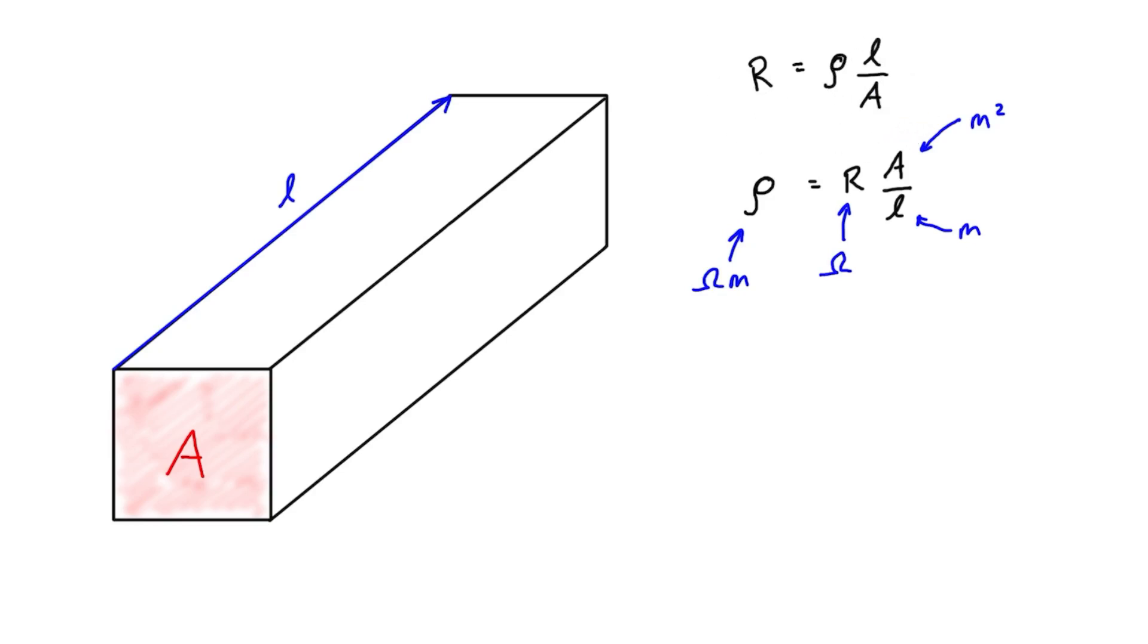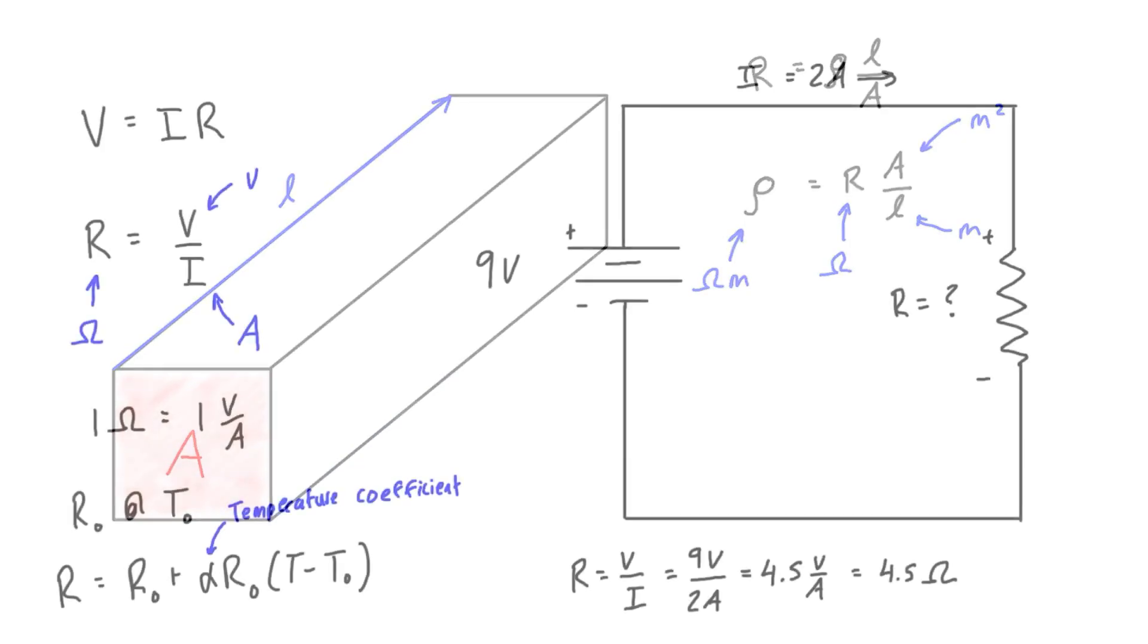So if we just quickly flip back to the previous video, which is right here, if you want to watch it, I'll put a link to it in the top right corner. But basically what I was talking about here was finding the resistance of this resistor in this very simple circuit with a single voltage source and a single resistor. And basically we just determined the resistor to have 4.5 ohms of resistance based on a nine volt battery and a two amp current.